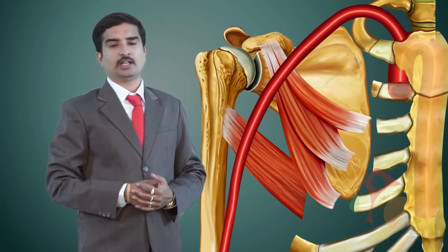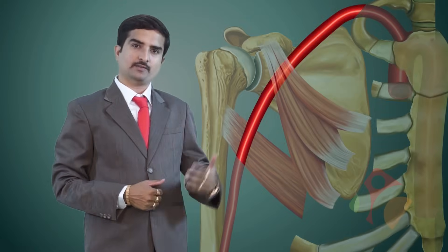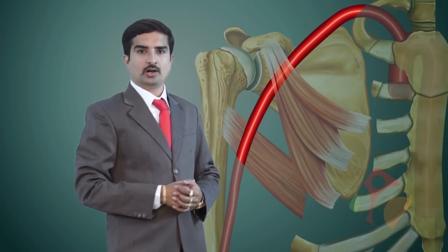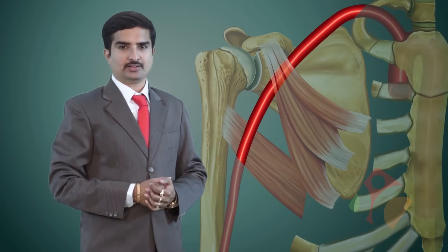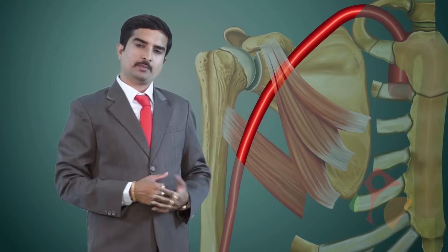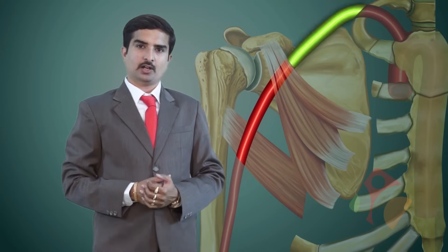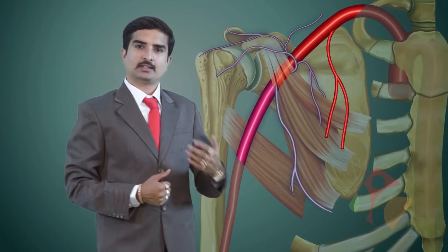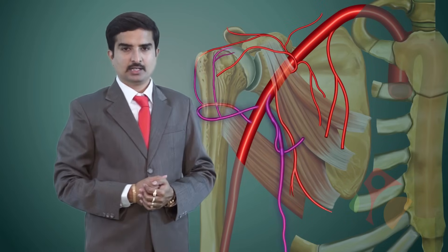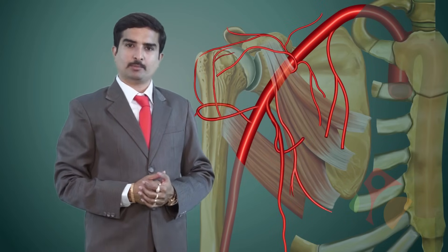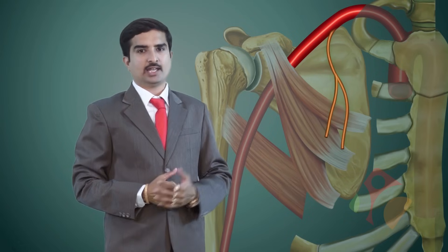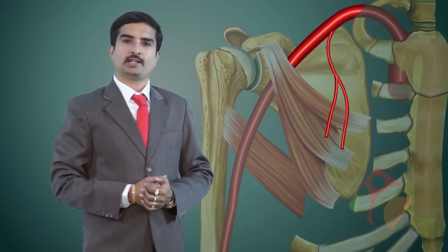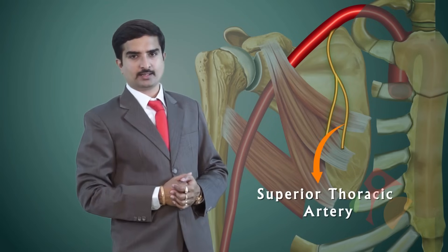After knowing the relations of each part of the axillary artery in detail, let us now concentrate on the branches. The first part of the artery gives off one branch, the second part gives off two branches, and the third part gives off three branches. The first branch arising from the first part of the axillary artery is called the superior thoracic artery.